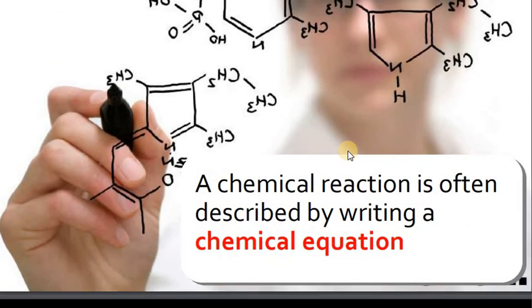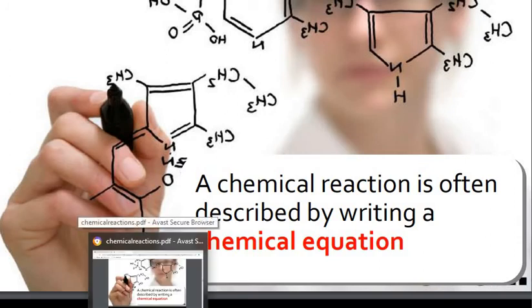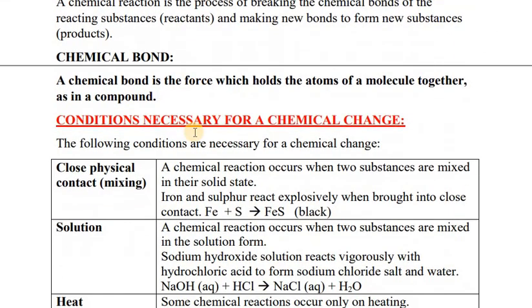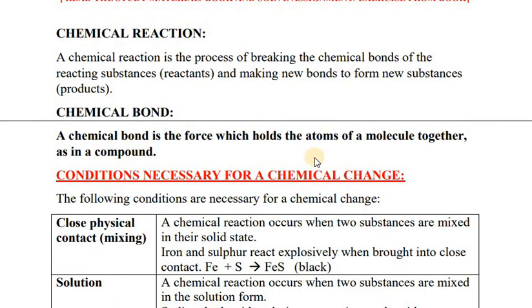The chemical equation shows reactants converting into products. A chemical reaction is the process of breaking bonds — all old bonds are broken and new bonds are formed. Energy is required to break bonds and energy is released when bonds form. If the energy released in forming bonds is more than the energy required to break bonds, the reaction is exothermic. If the energy released is less than the energy required to break bonds, the reaction is endothermic.